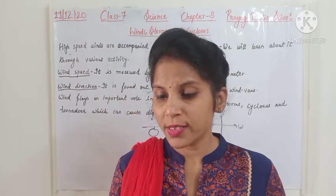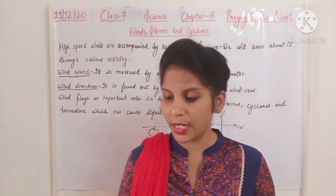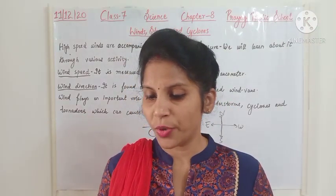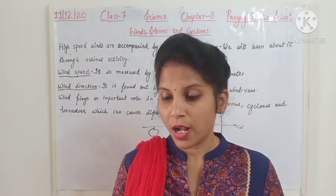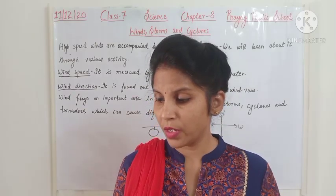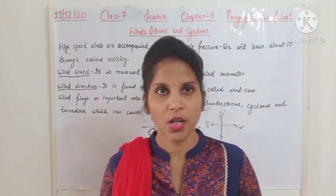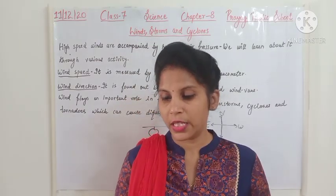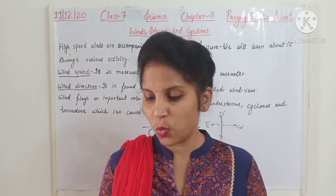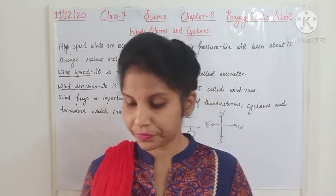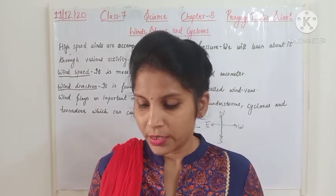Third, we should not take shelter under an isolated and tall tree, because an isolated tall tree is more likely to be hit by lightning due to its nearness to the clouds. Fourth, a car is a safe place to take shelter during lightning because its metal body can conduct lightning to the earth safely without harming us. Fifth, if we are in water — such as a swimming pool or a beach — when the thunderstorm begins and lightning takes place, we should get out of the water and go inside a building.